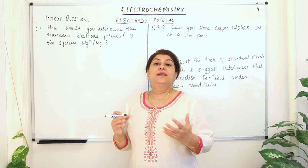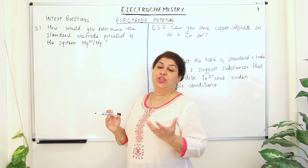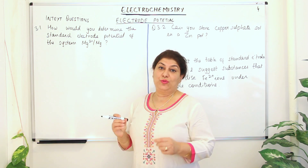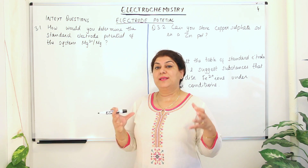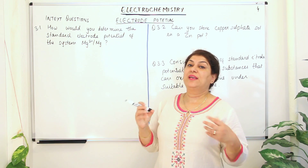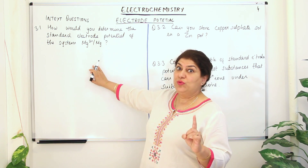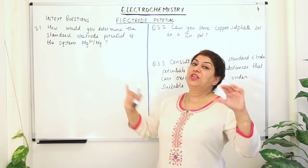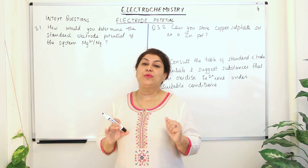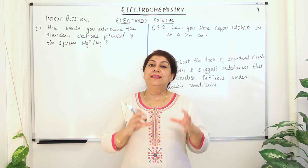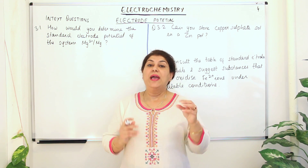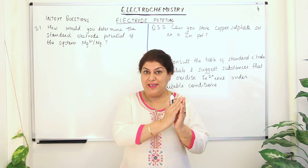In order to find out the standard electrode potential, you cannot find out the standard electrode potential of a single electrode. You always have to form a galvanic cell, and then the EMF of the cell gives you the electrode potential if you know the electrode potential of the other electrode. As I told you in the previous video, we take the hydrogen electrode by convention to have a value of zero and we use it as the reference electrode.